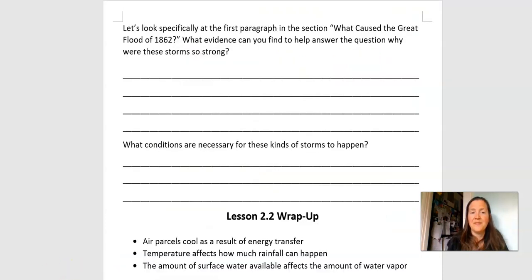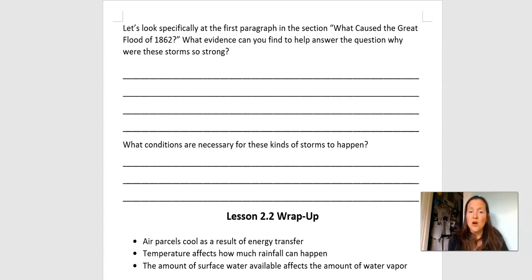Here's our place to write down our thoughts. I looked at those paragraphs with you — what caused the Great Flood of 1862. I'm hoping that you can now find some evidence about why these storms were so strong and write your thoughts down. You should now know more information about what conditions are necessary for these kinds of storms to happen, so take some time to reflect and write.